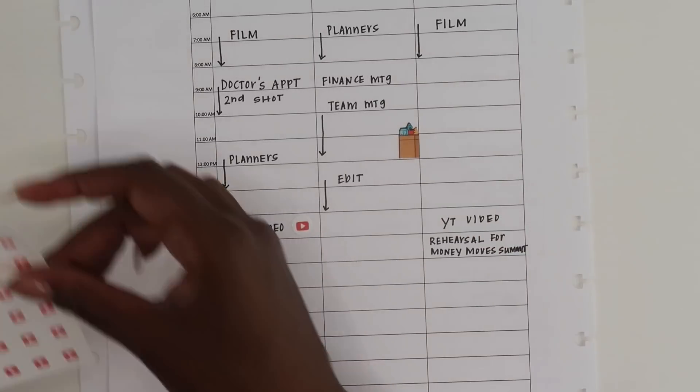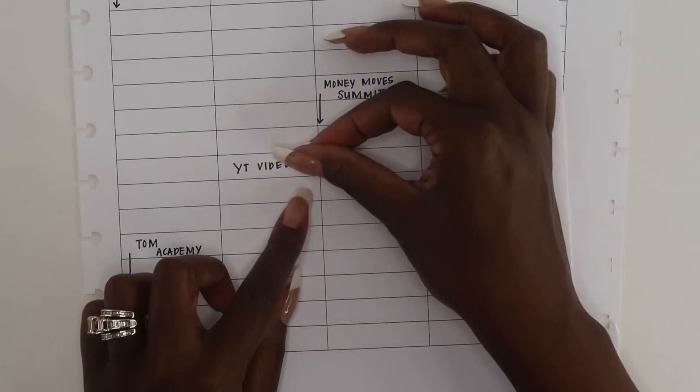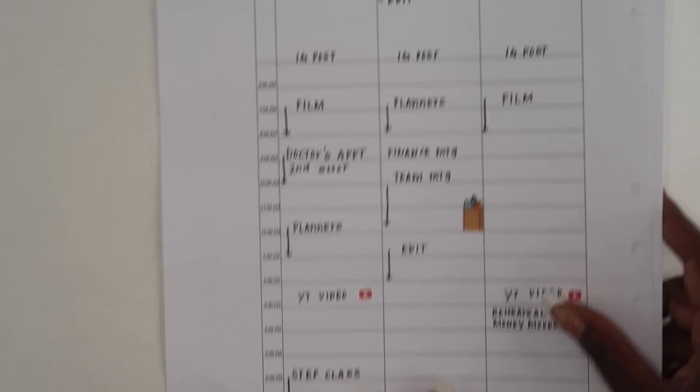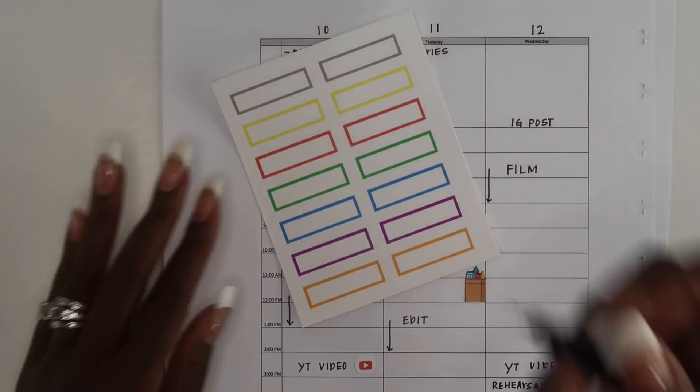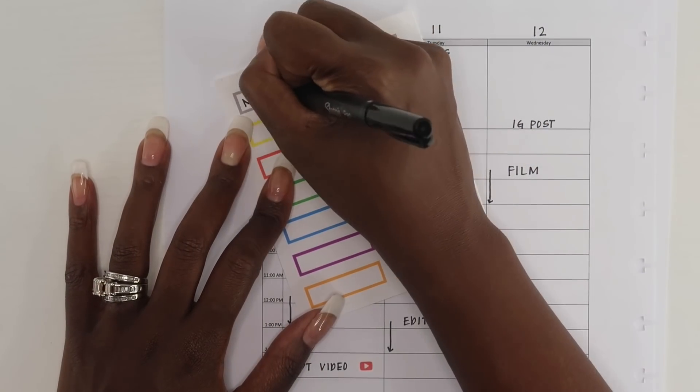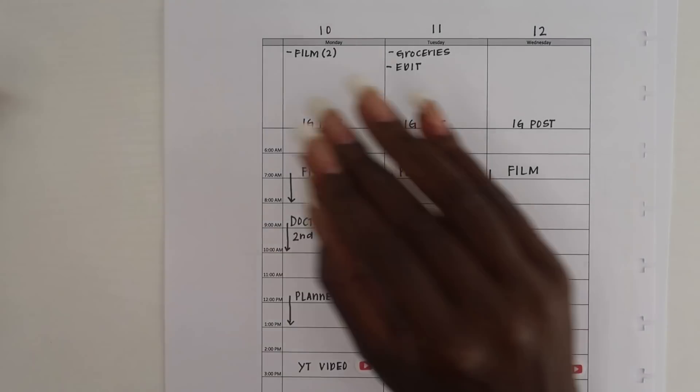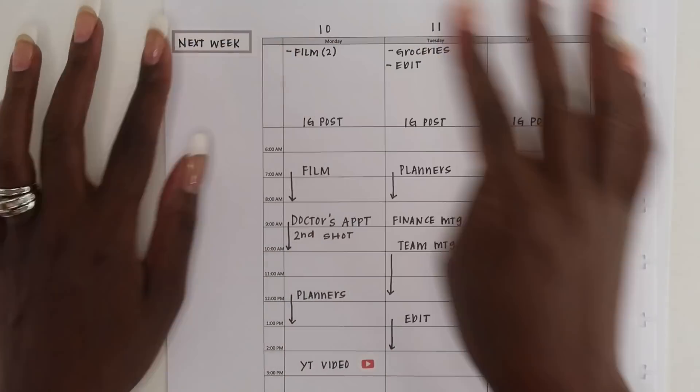This is a way to not let my planner get too crowded where I just have to write in every single thing. A lot of times I will use functional stickers to let myself know that I need to pick up groceries or post to Instagram or post a YouTube video. Instead of writing it out completely, I'll add a sticker.